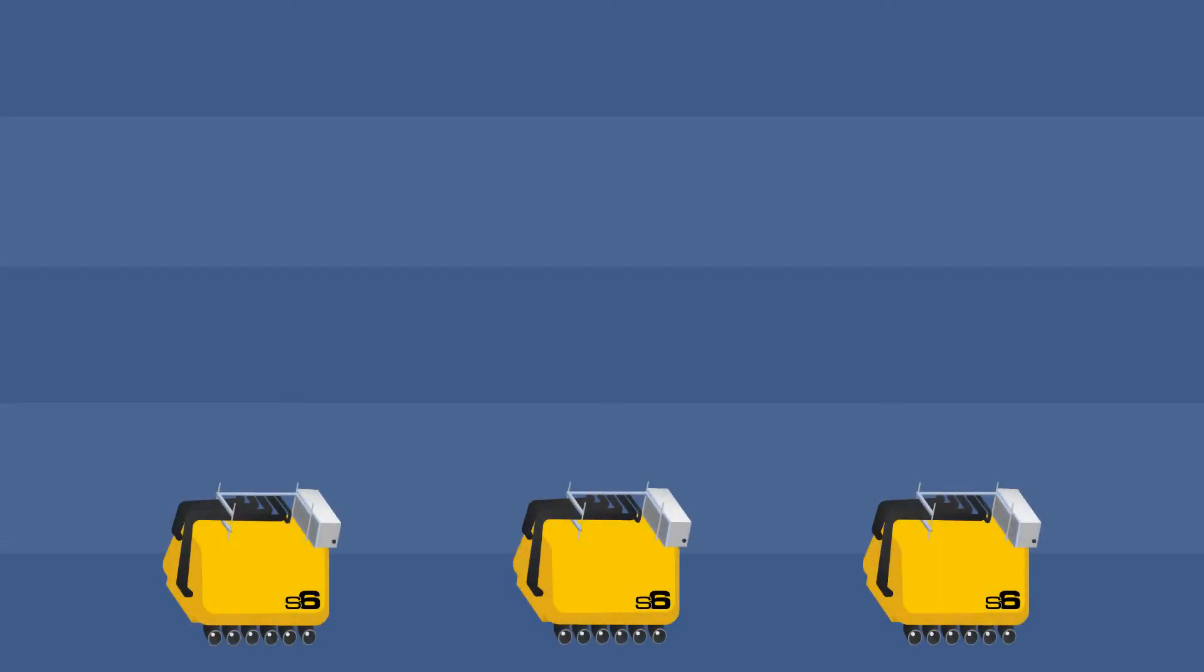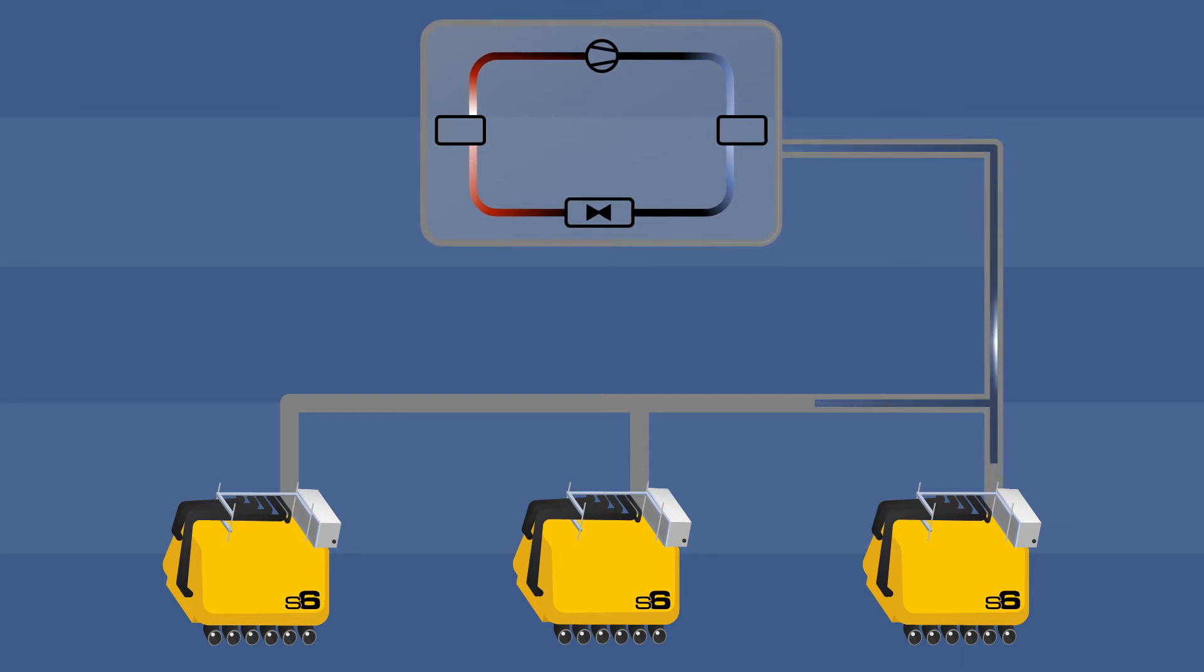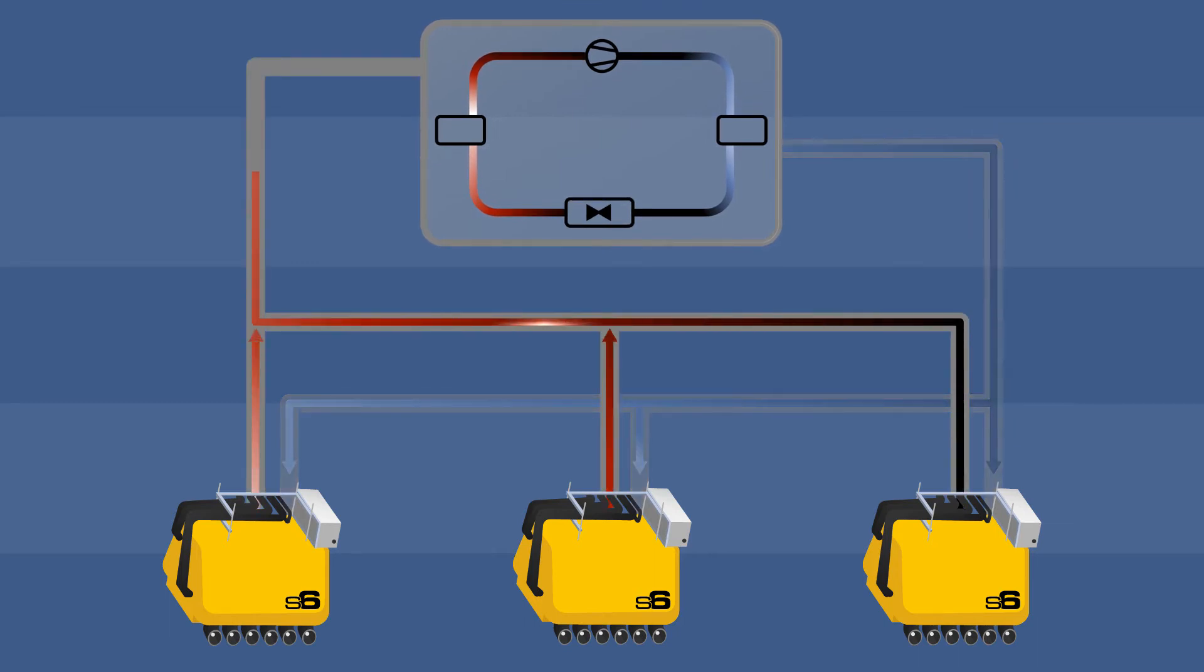All S6 units are part of a closed cooling system powered by a central station. Cold is transported to the units, heat is dissipated, and no heat is released into the hall.